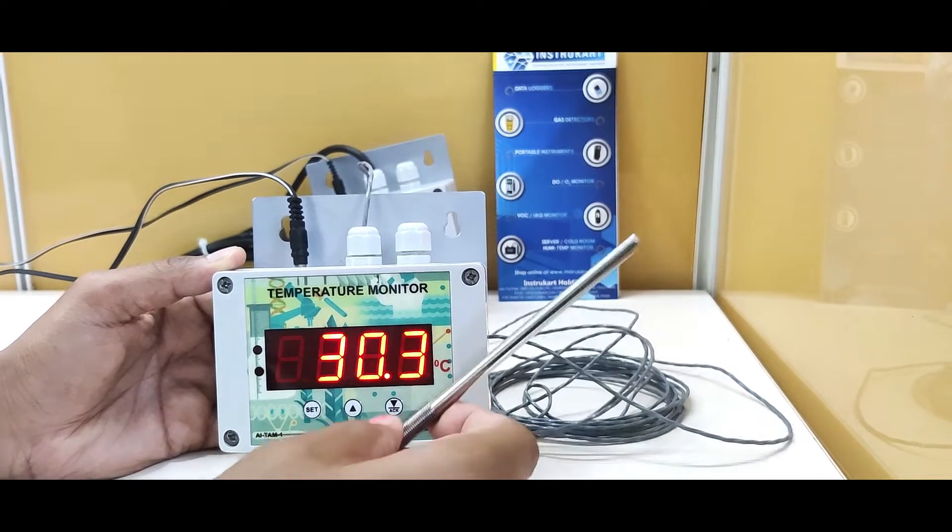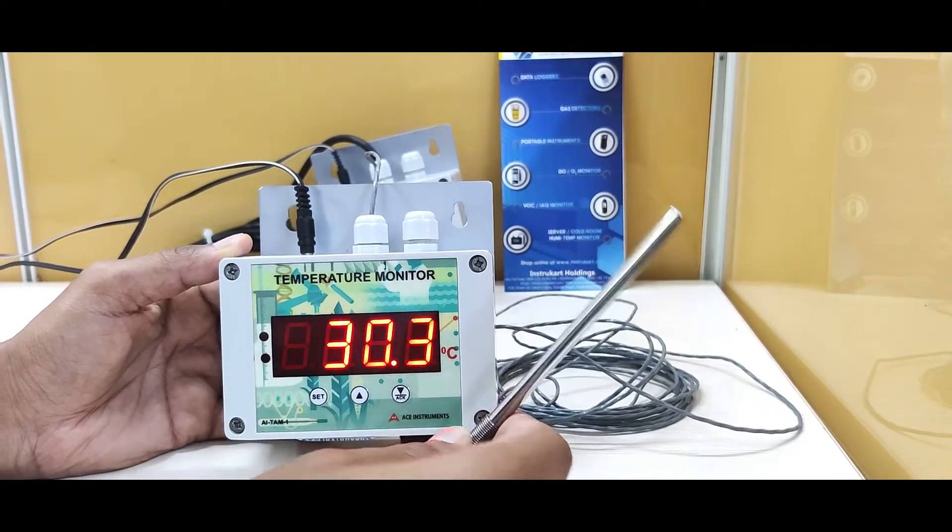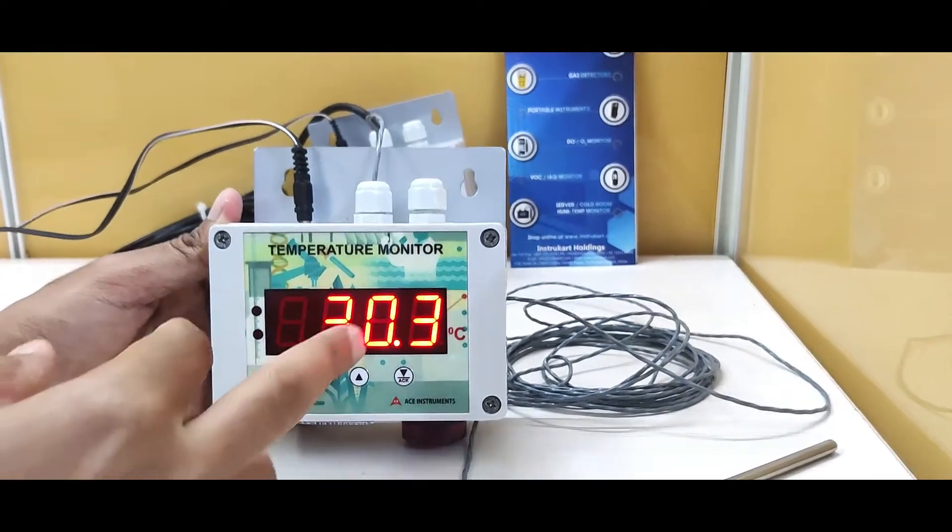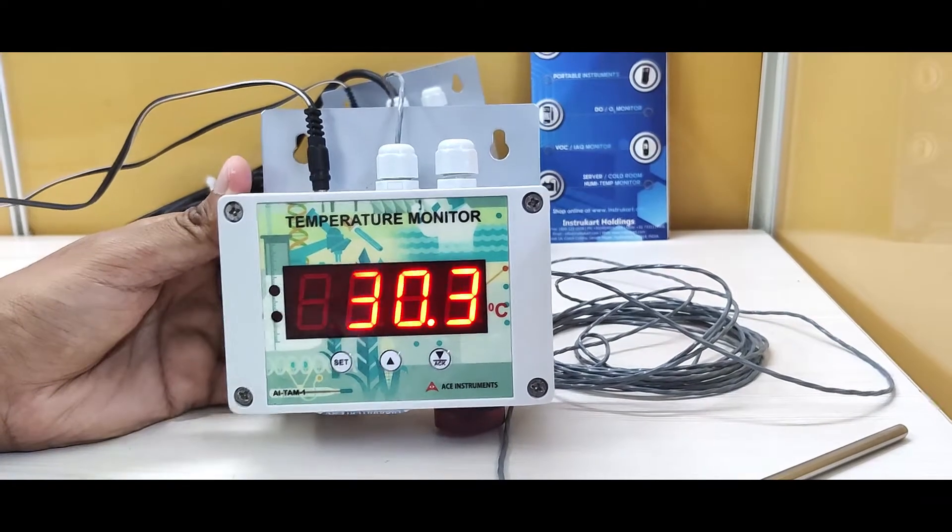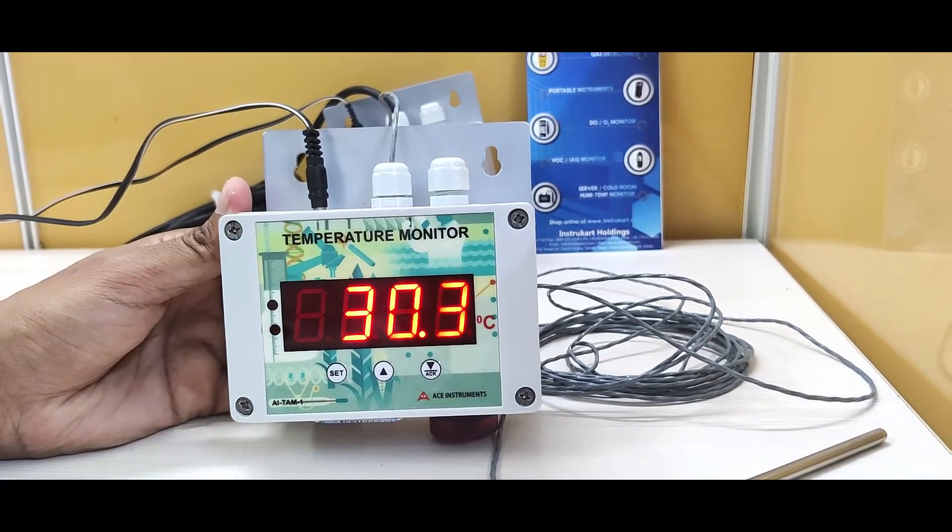It has an accuracy of plus or minus 0.3 degrees Celsius. You can see the super bright LED seven-segment display. This is 0.8 inches, however it can be customized based on your need.